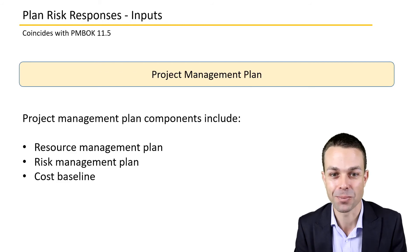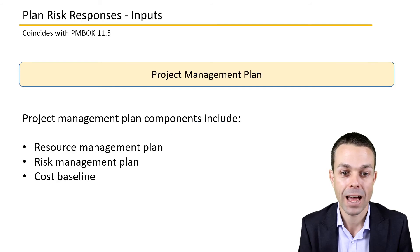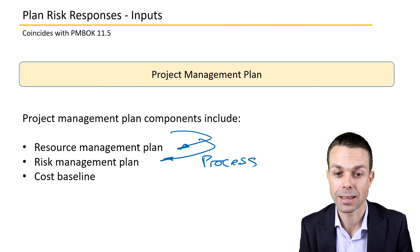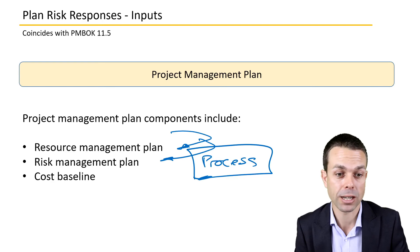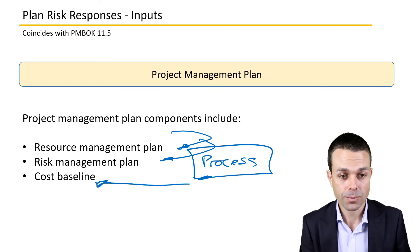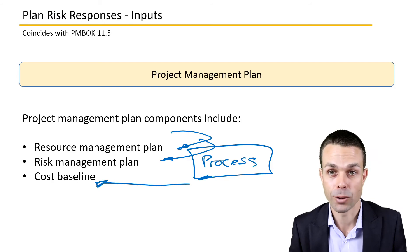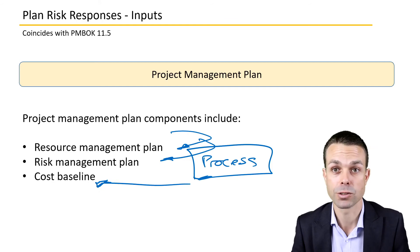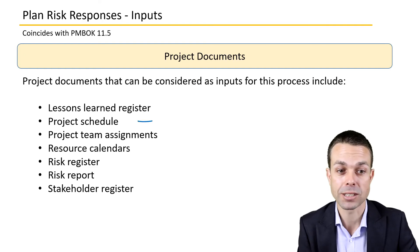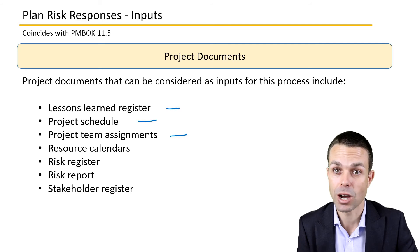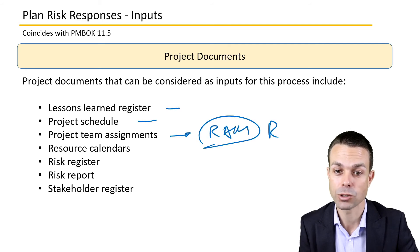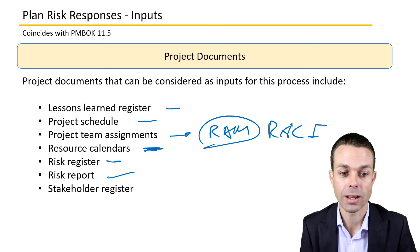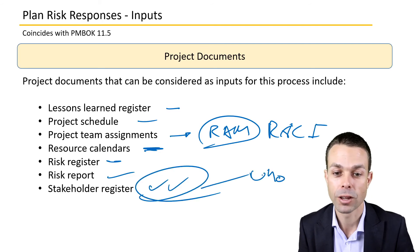Looking at the inputs in more detail: the project management plan includes the resource management plan, the risk management plan — the process we agreed upon for gathering and analysing risks — and the cost baseline. Project documents we might need include the project schedule, lessons learned, project team assignments such as the RACI, resource calendars showing who is available and when, the risk register, risk report, and stakeholder register.